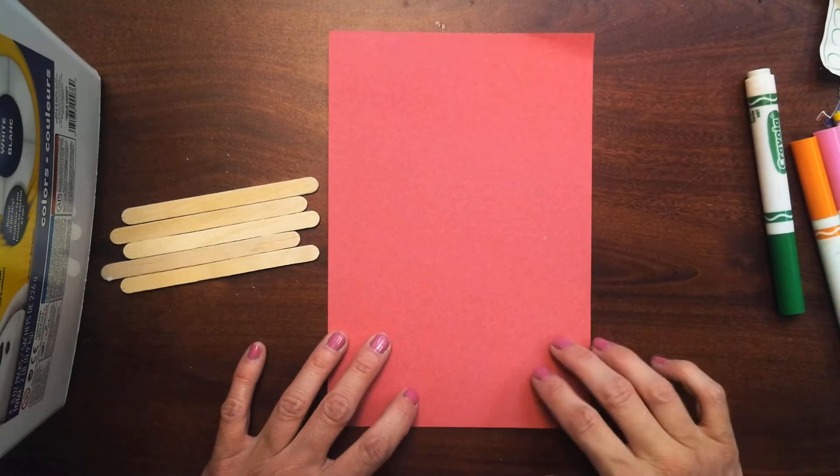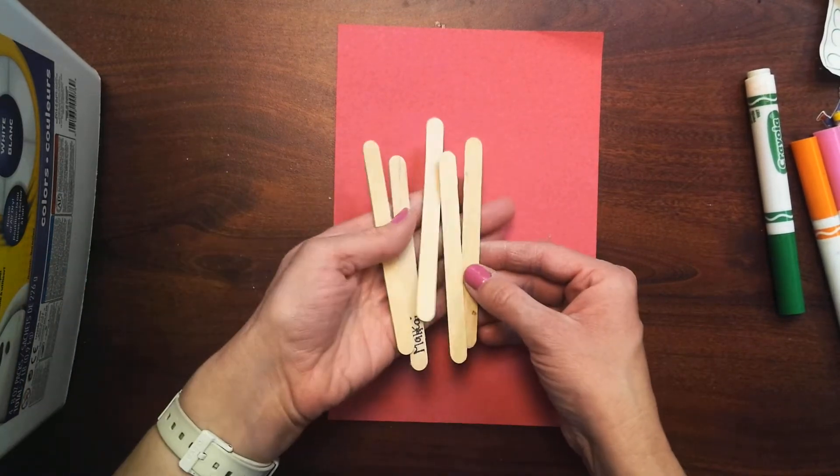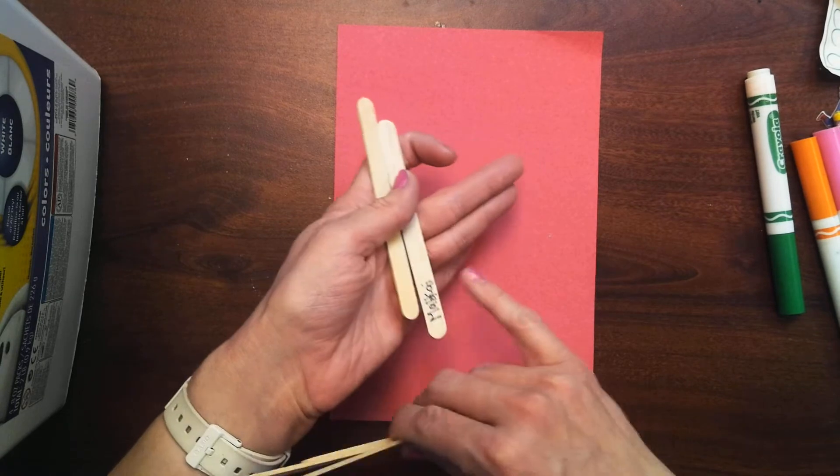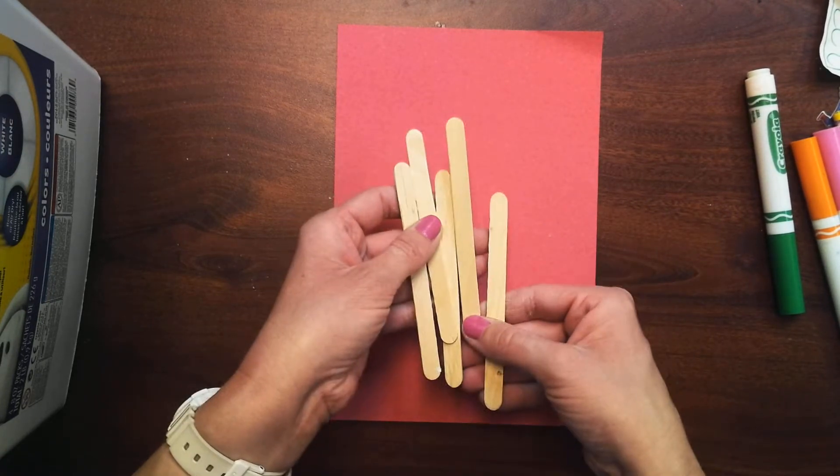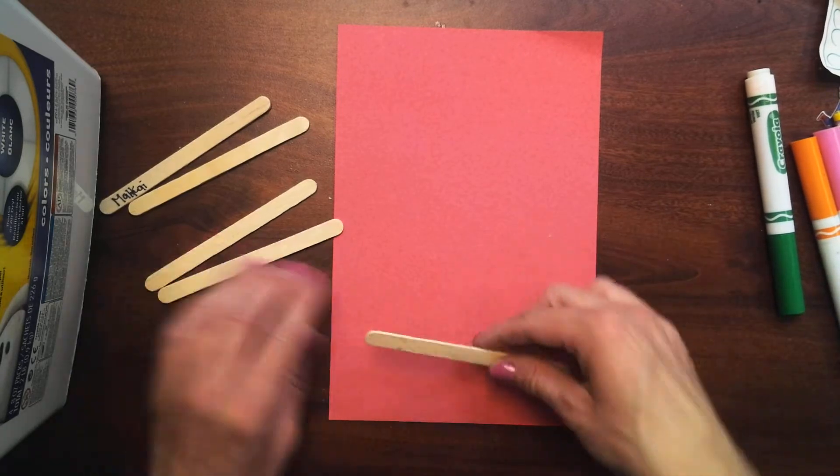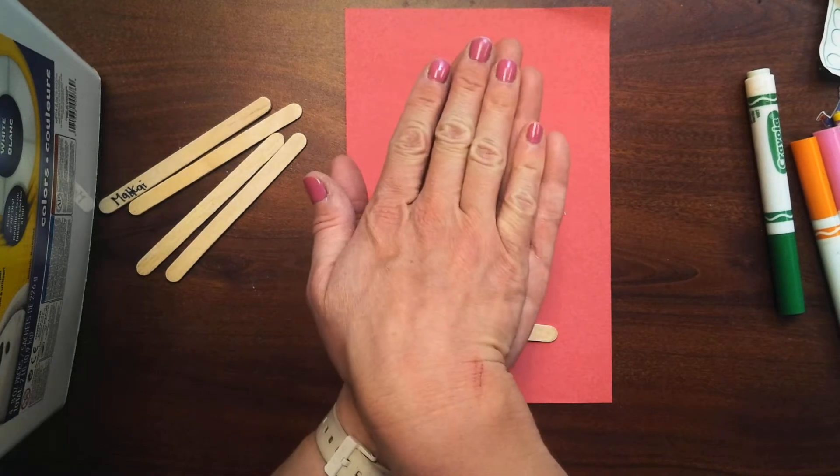You're going to get a piece of paper and five popsicle sticks. Some of them might have names on the back but that's okay you can just turn it over. And we're going to make them symmetrical which remember means the same on both sides.